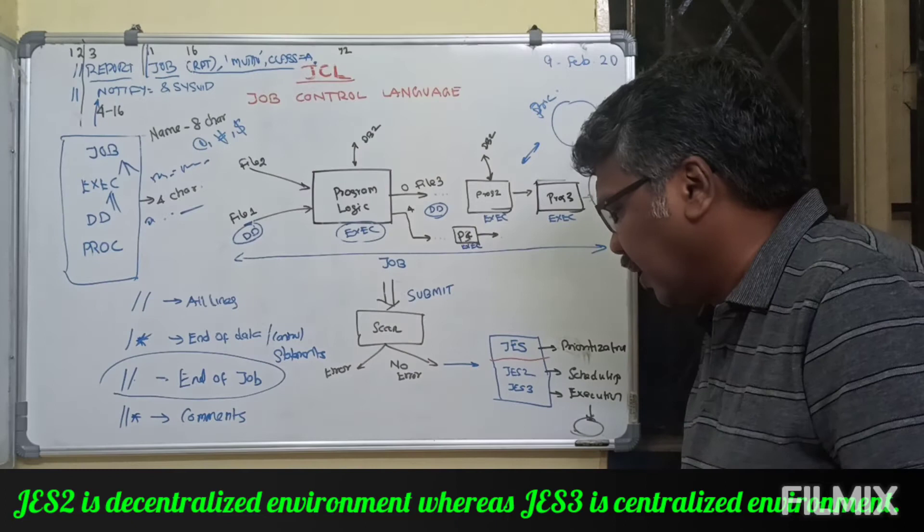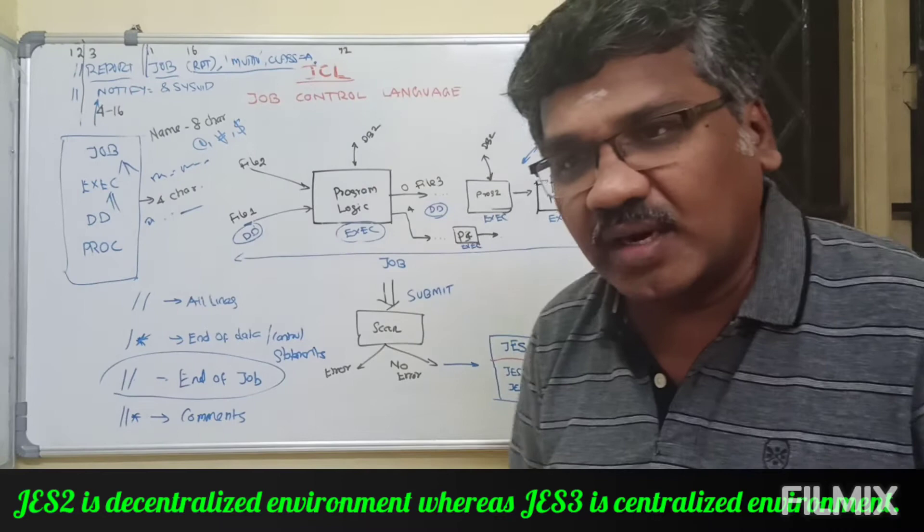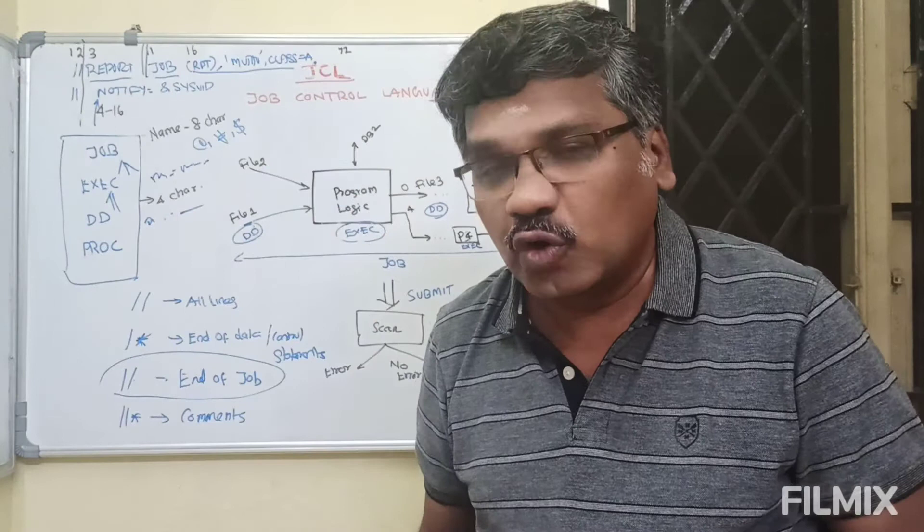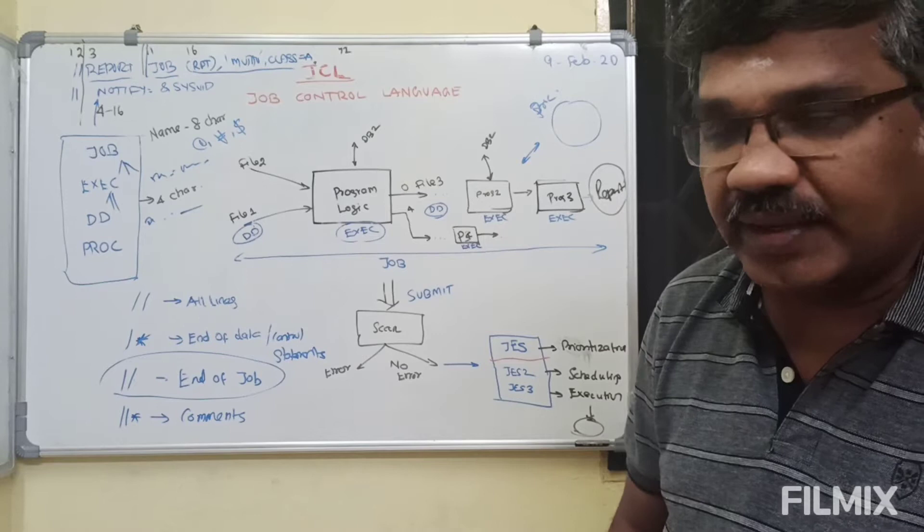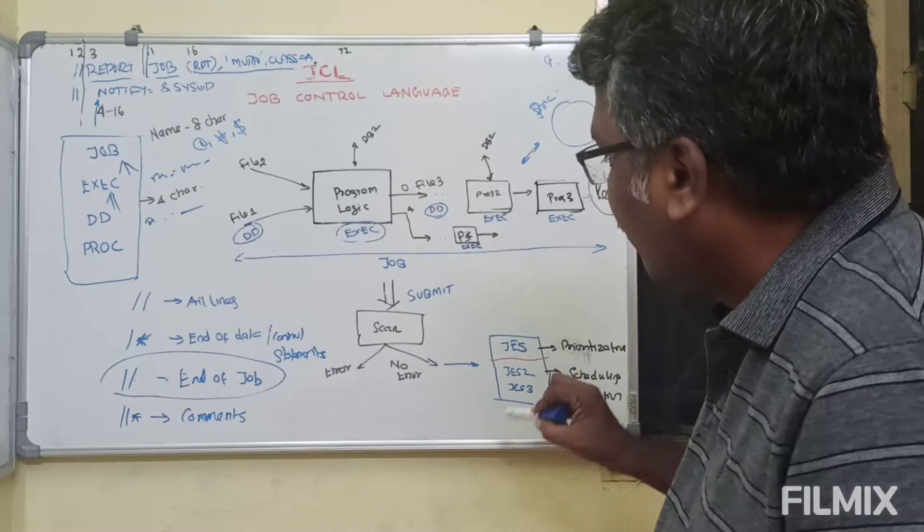The main difference between these two: JES2 is like, if five processors are there, all five will be working in parallel. In the case of JES3, there will be one global processor that will receive the jobs and route them to other processors based on workload and availability. That is centralized; JES2 is decentralized.